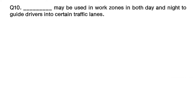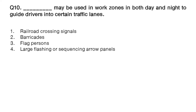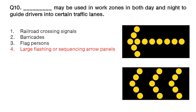Question: what may be used in work zones in both day and night to guide drivers into certain traffic lanes? Option number 1: railroad crossing signals. Option number 2: barricades. Option number 3: flag persons. Option number 4: large flashing or sequencing arrow panels. The answer is option number 4: large flashing or sequencing arrow panels.